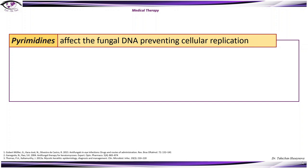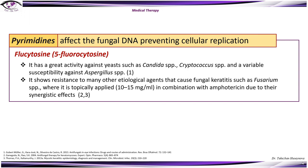Pyrimidines affect fungal DNA, preventing cellular replication. Flucytosine has great activity against yeasts such as Candida and Cryptococcus, and variable success against Aspergillus. It shows resistance with many other etiological agents causing fungal keratitis, so it is better used in combination with amphotericin B due to their synergistic effects.